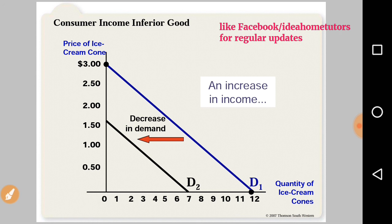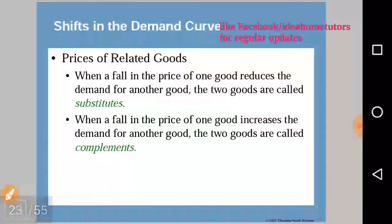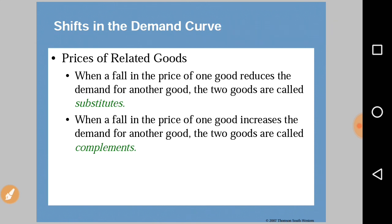Another factor that leads to a shift in the demand curve is the prices of related goods. Related goods are of two types: substitutes and complements. Substitutes are goods that can be used in place of another — if Y is an alternative to X, it is a substitute. Complementary goods are those used together with one another. For example, Pepsi and Coca-Cola are substitutes, while tea and milk are complementary goods.